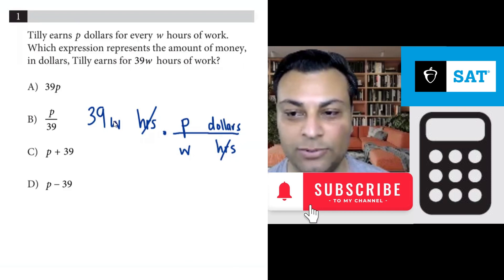Now you can cancel the W's right now if you'd like or you can just keep going and you would have 39WP for the numerator. 39, let's call it PW and the bottom is just W.